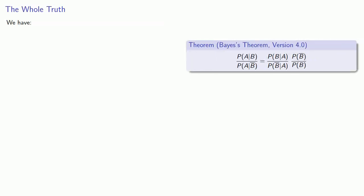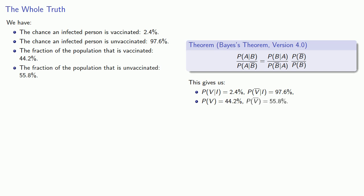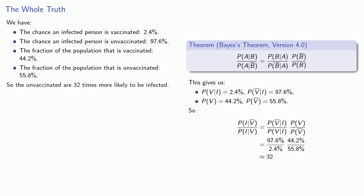Without going into the details, we can use Bayes' Theorem to compute what's known as a likelihood ratio. In this case, we might want to know the increase in probability of infection, given that a person is unvaccinated. So, given our data, we know that the chance an infected person is vaccinated is 2.4%, while the chance an infected person is unvaccinated is 97.6%. Also, the fraction of the population that's vaccinated, 44.2%, and the fraction of the population that is unvaccinated, 55.8%. And again, without going into the details of the computation, these numbers tell us that the unvaccinated are 32 times more likely to be infected.